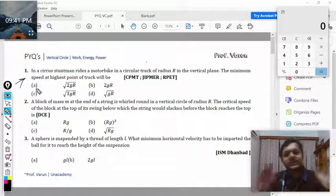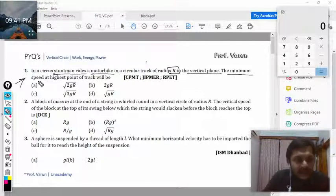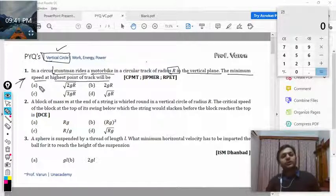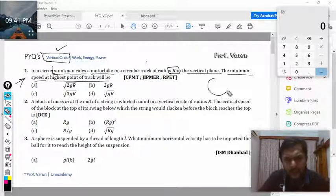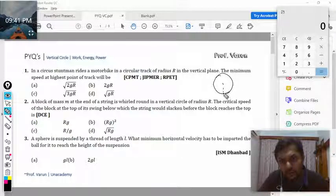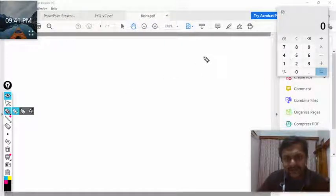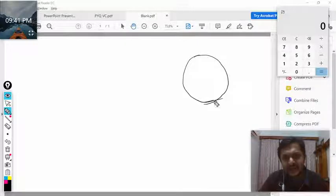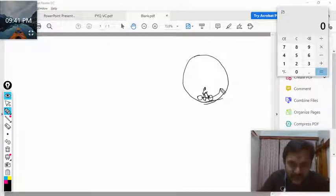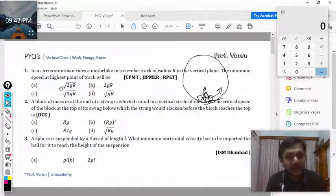This is the first question: In a circus, a stuntman rides a motorbike in a circular track of radius R in a vertical plane. The minimum speed at the highest point of the track will be? We are completing the PYQs for the topic of vertical circles. This is the vertical circle, so here is the motorcyclist. This is the circle and there is a motorcyclist here. This motorcycle is trying to cover the loop.